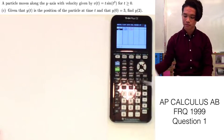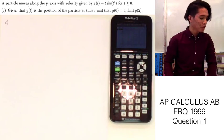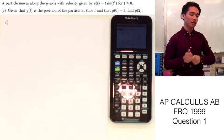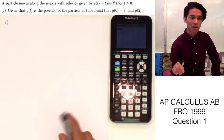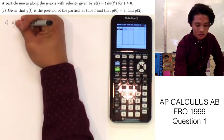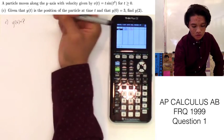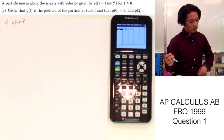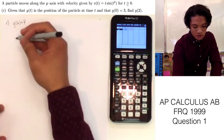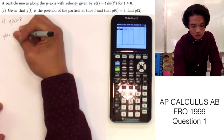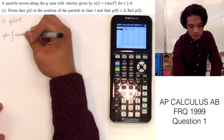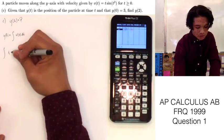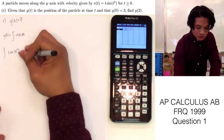Now for Part C: given that y of t is the position of the particle at time t, and y of 0 equals 3, find y of 2. Since y of t is the position, we find the antiderivative of v of t. So y of t equals the integral of v of t dt. Plugging in v of t from the problem, we get the integral of t sine of t squared dt. Here we can use u-substitution, where u equals t squared.